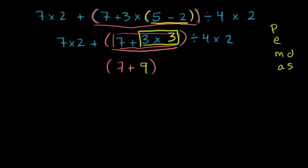That's going to be in the orange parentheses. And then you have the 7 times 2 plus that on the left-hand side. You have the divided by 4 times 2 on the right-hand side. And now the thing in parentheses, because we still want to do the parentheses first, pretty easy to evaluate. What's 7 plus 9? 7 plus 9 is 16. And so everything we have simplifies to 7 times 2 plus 16 divided by 4 times 2.